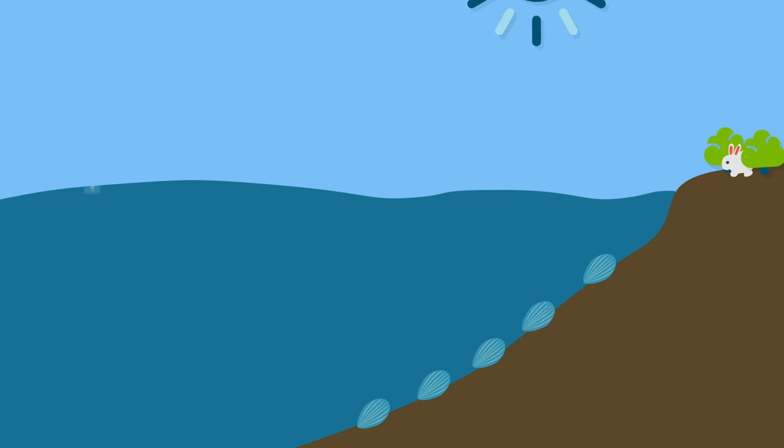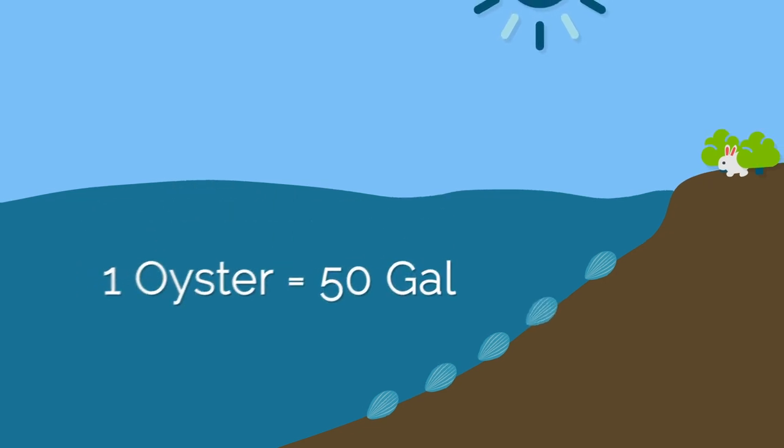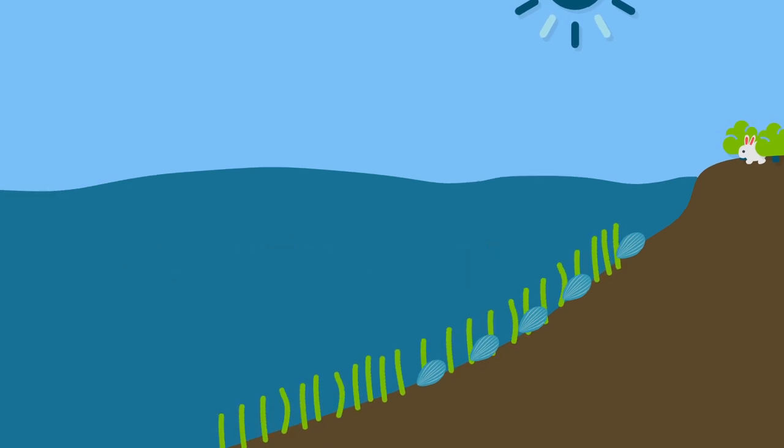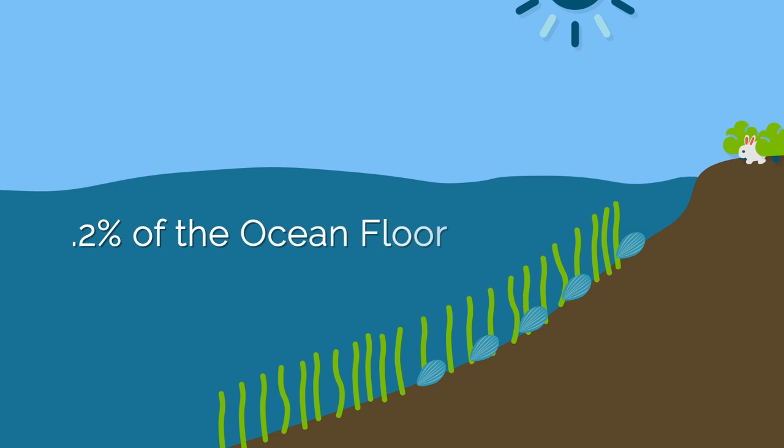A single adult oyster can clean and filter up to 50 gallons of water a day. Then, they added eelgrass. Did you know that seagrass covers less than two-tenths of 1% of the ocean floor, but stores almost 10% of the carbon buried in the oceans each year?